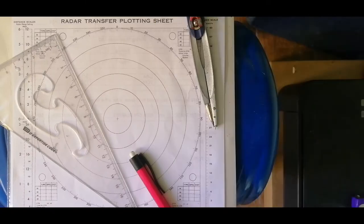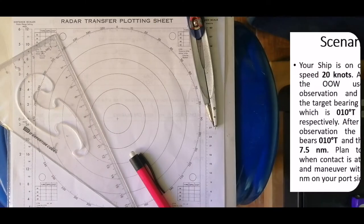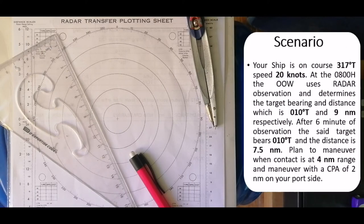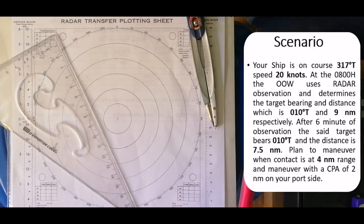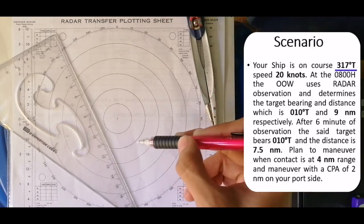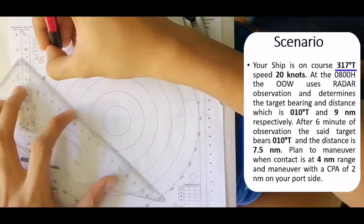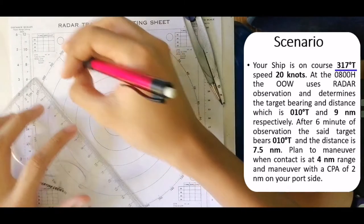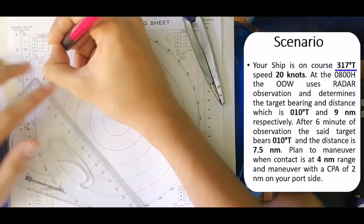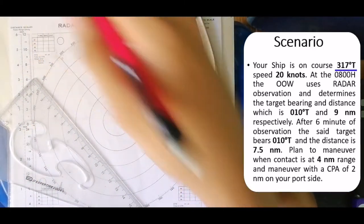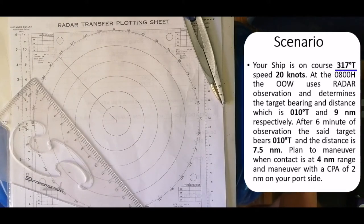We now have our radar transfer plotting sheet. To go through this procedure, let's use our sample scenario. First thing you want to do is to plot your own course for the own ship. Next, you want to plot your first and second observations.